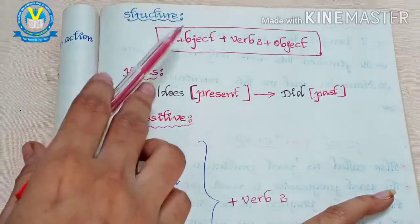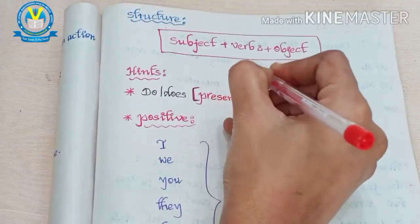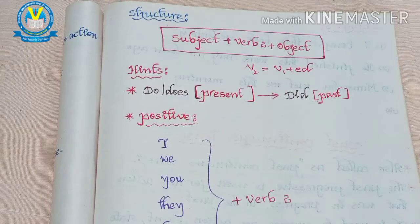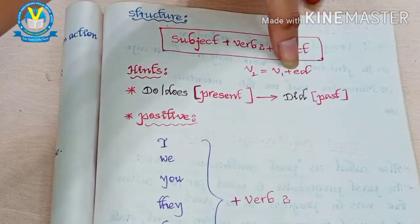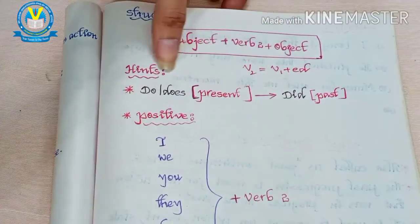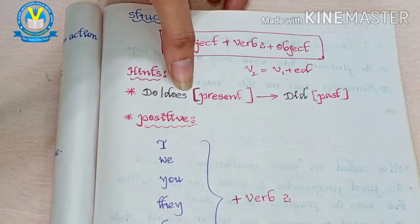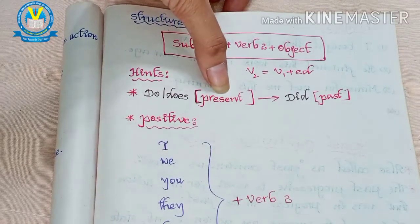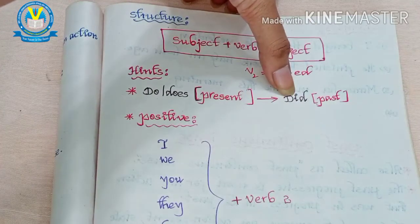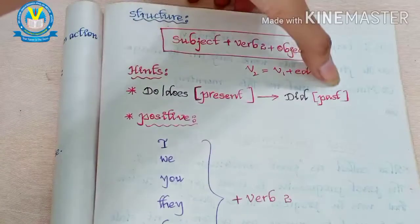Here is the structure of simple past tense: Subject + Verb 2 + Object. Verb 2 means Verb 1 plus 'ed'. For example, 'watch' plus 'ed' gives 'watched'; 'dance' plus 'ed' gives 'danced'. Note that 'do' and 'does' are helping verbs used in present tense, while coming into the past tense we use 'did'. So 'do' and 'does' are used in present tense, and 'did' is used in past tense.